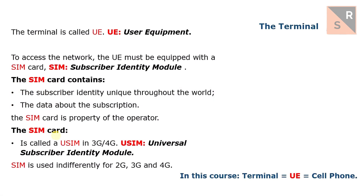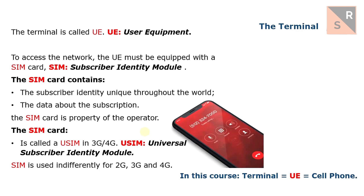The first element is something that we all know well because we carry it with us — it is the terminal. A cell phone or a smartphone like this one. In the LTE standard, the terminal is called UE, which stands for User Equipment. Within this course, a terminal can be referred to as a UE, a terminal, or a cell phone.